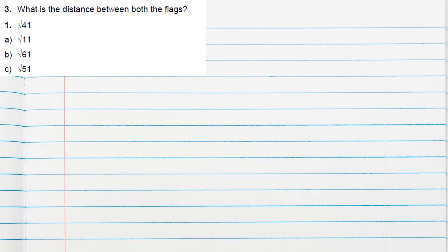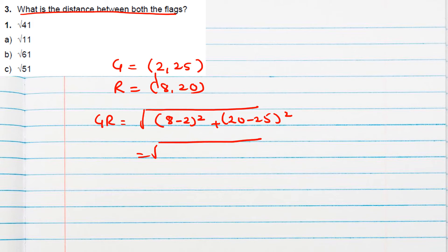The third question is: what is the distance between both flags? We know green flag is (2, 25) and red flag is (8, 20). The distance between G and R can be given by the distance formula: √[(x2 - x1)² + (y2 - y1)²]. So √[(8-2)² + (20-25)²] = √[36 + 25] = √61. So option B is correct.